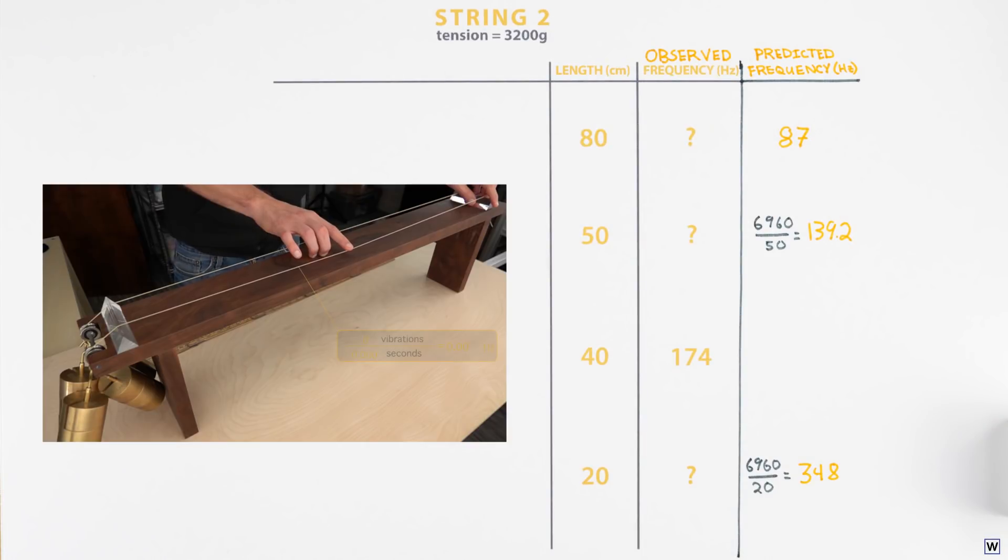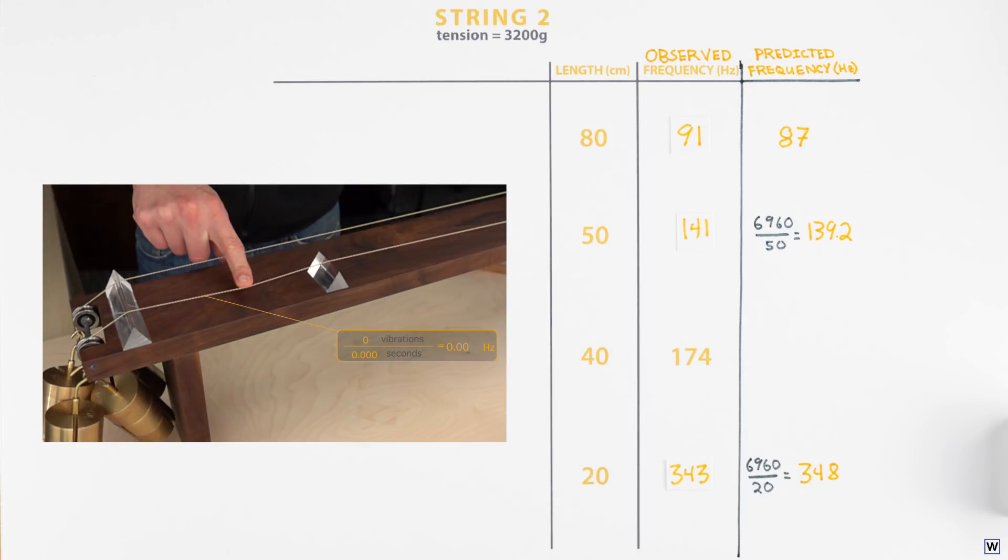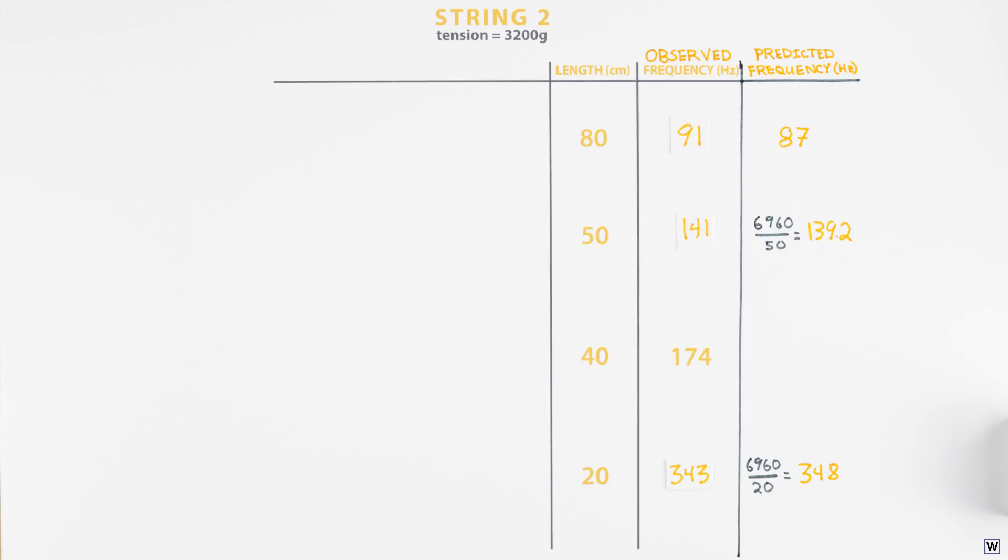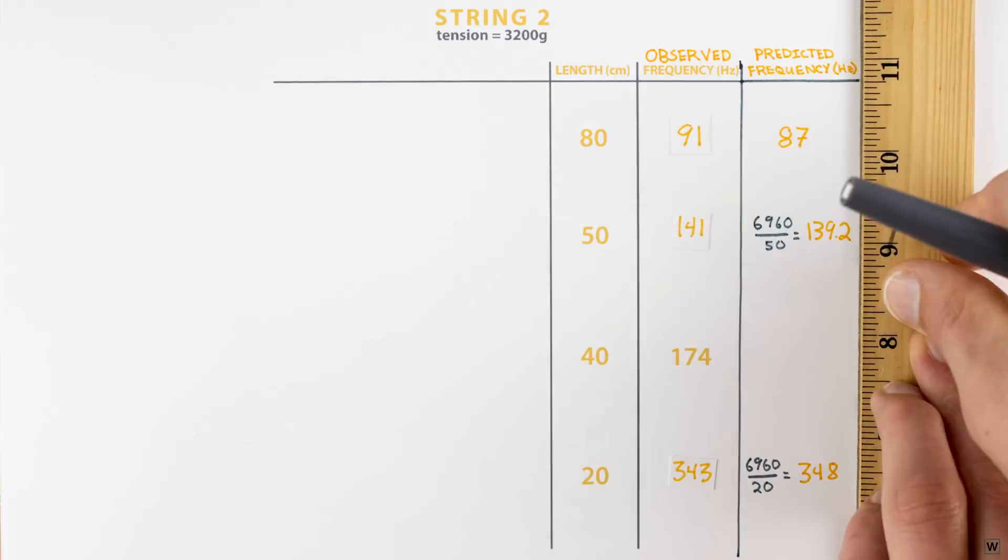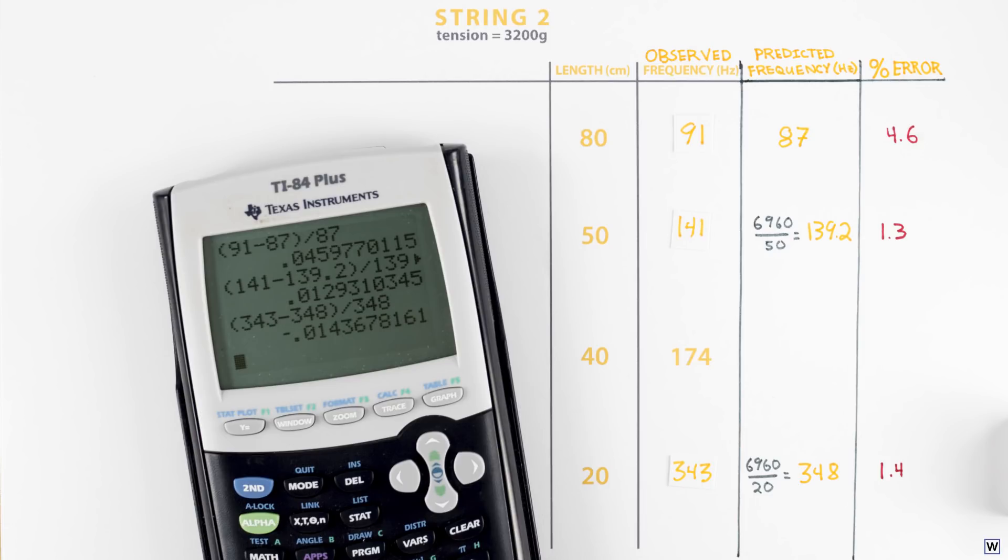Using our slow motion camera and counting vibrations, we measure frequencies of 91 hertz for our 80 centimeter string, 141 hertz for our 50 centimeter string, and 343 hertz for our 20 centimeter string. And if we compare our results to our predictions, it looks like our predictions are pretty good. In fact, our percent errors are 4.6, 1.3 and 1.4 percent. Not bad at all.